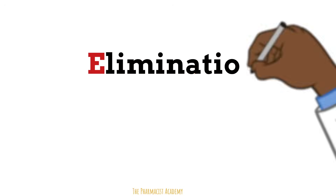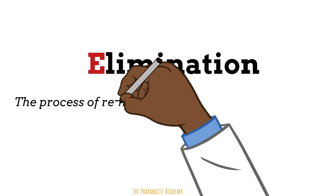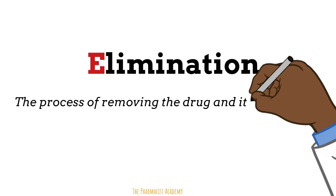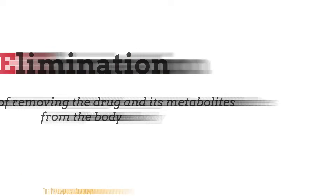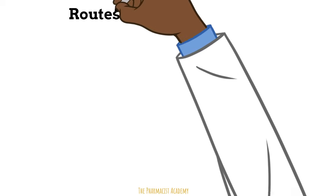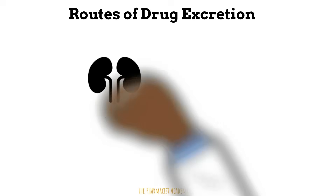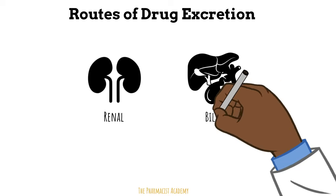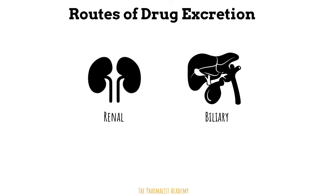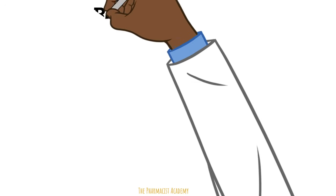Lastly, elimination. This is the process of removing the drug and its metabolites from the body. There are many ways to excrete things in the body. The primary way is through the kidneys and the biliary system, where the liver releases drugs into the bile, which then moves into the GI tract for excretion. Drugs can also be excreted through saliva, sweat, breast milk, and lungs, but these are not too significant.